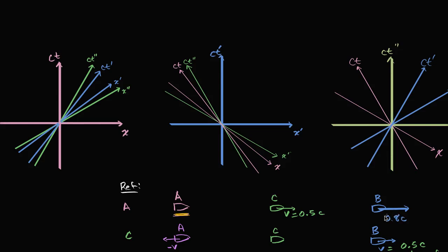We've already seen that we can overlay the space-time diagrams for each of these frames of reference. If we do our axes, the x direction represents one direction of space-time associated with space, and the ct vertical axis represents another direction of space-time that we perceive as the passage of time. You can then overlay B's frame of reference and get these skewed axes.